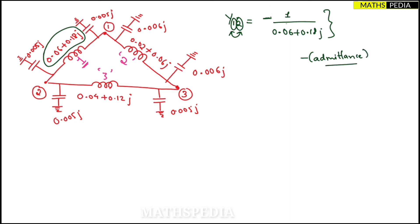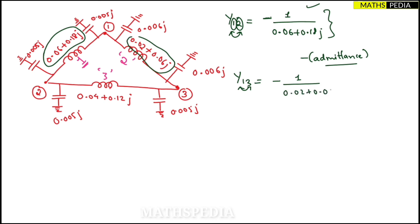So Y12 = −1/(0.06 + j0.18). Do not add half-line charging for non-diagonal or off-diagonal elements. The rule is simply: minus of the admittance, or equivalently minus one divided by the impedance between those two nodes.